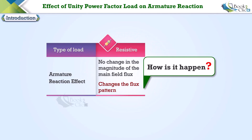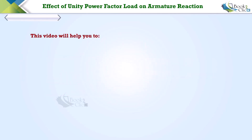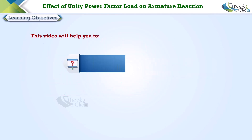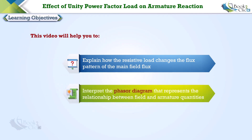How does it happen? This video will help you explain how the resistive load changes the flux pattern of the main field flux, and interpret the phasor diagram that represents the relationship between field and armature quantities.